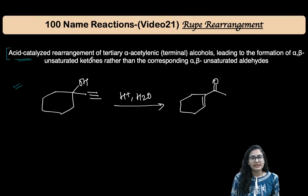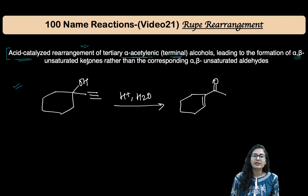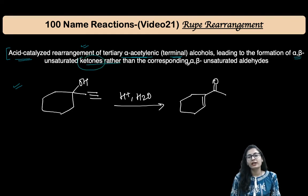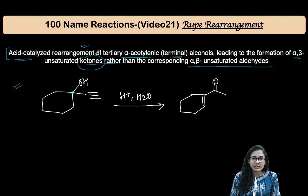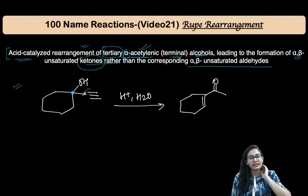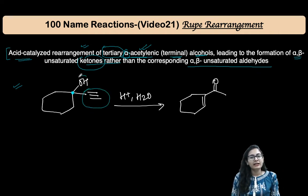The Rupe Rearrangement is an acid-catalyzed rearrangement of tertiary alpha-acetylinic terminal alcohols, leading to the formation of alpha-beta unsaturated ketones rather than the corresponding alpha-beta unsaturated aldehyde. We are talking about a tertiary alpha-acetylinic alcohol, where on the same carbon you have both the alkynyl group and the alcohol.